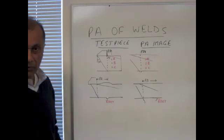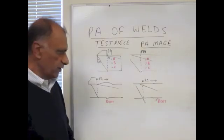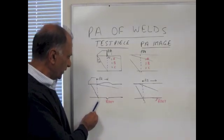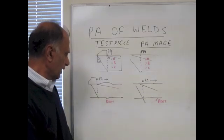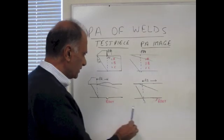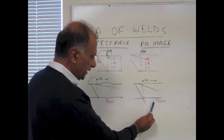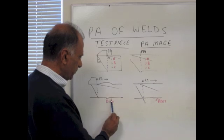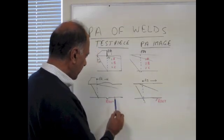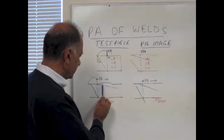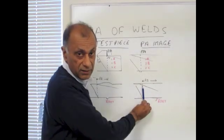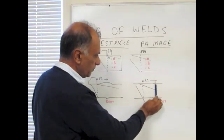Now let's go to example number two. This is on an actual weld and we are looking at the root of the weld. We are sweeping the beam from 30 degrees to 70 or 75 degrees, and the only reflector we have is the root of the weld. On the phased array image the root will show up below the bottom surface line of the plate. The PA distance — from the front of the wedge to the root — will correspond directly to that measurement on the phased array image.